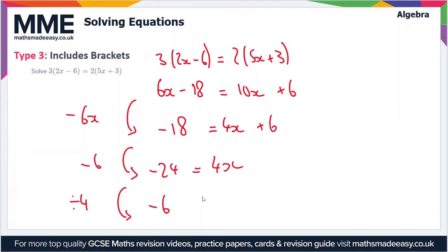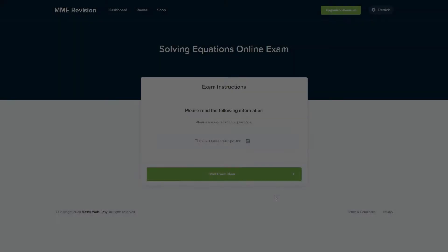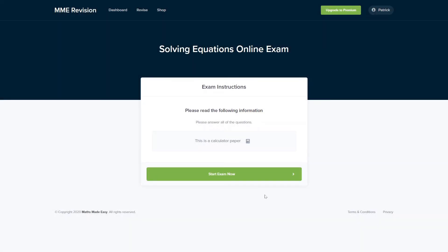And then the next step is to divide by 4 to get x on its own. So minus 24 divided by 4 is minus 6, so that's equal to x. So if you like, we can rewrite this as x equals minus 6, and that's our answer.